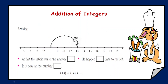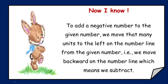Now here initially the rabbit was at the position plus 3. Then he hopped towards his left by 4 units — as it is towards the left, take it as minus 4. And finally the rabbit has reached the position minus 1. So addition of plus 3 with minus 4 is going to be minus 1. So what did we learn here? Whenever we are adding a negative number to any given number, we need to move towards the left — that is the rabbit will be moving in a backward direction on the number line.